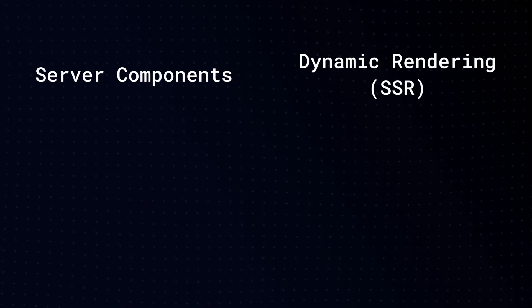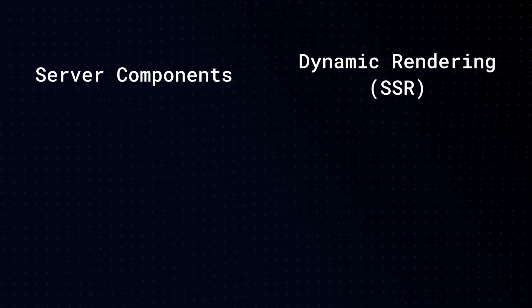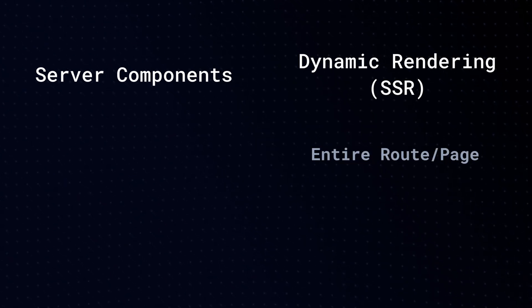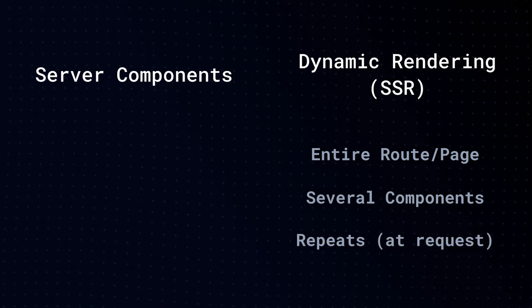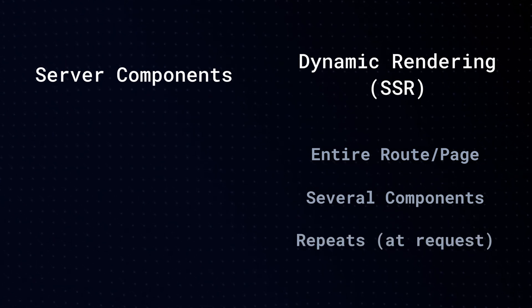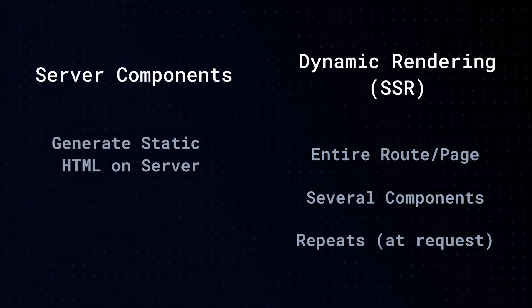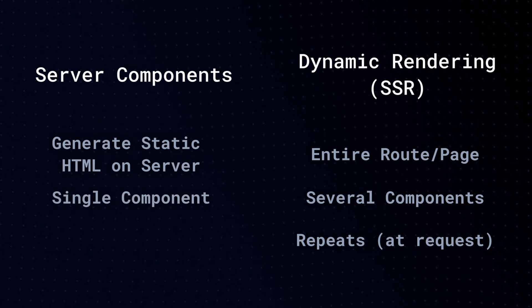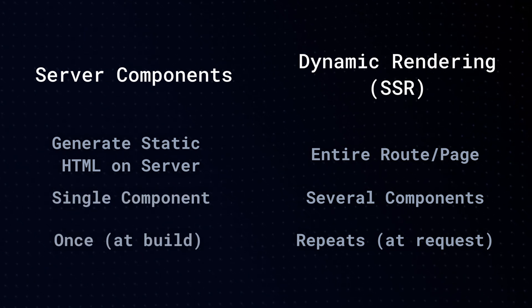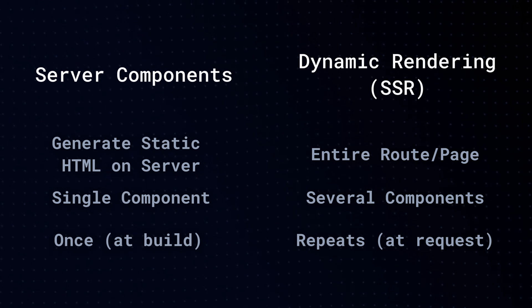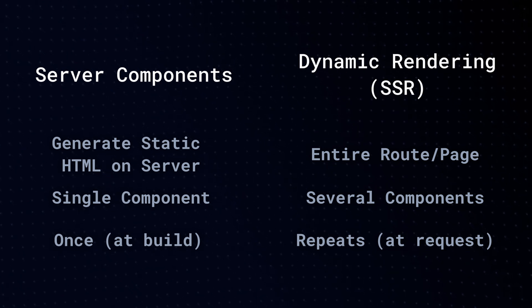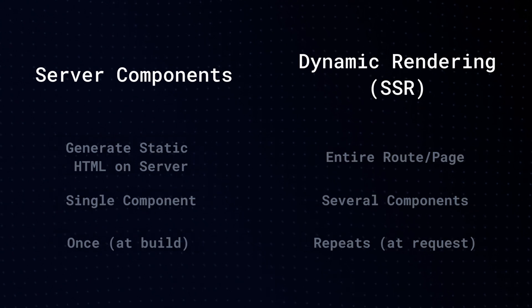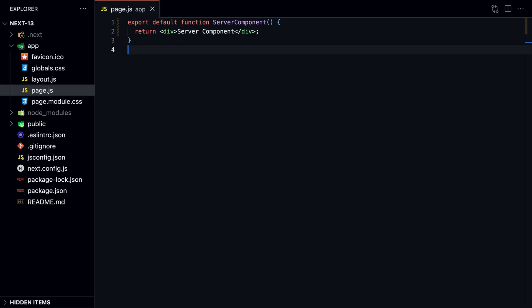Next.js recommends using server components and only client components when needed, as server components are better for performance. So what's the difference between server components and server-side rendering? Dynamic rendering, or server-side rendering, is the process of rendering an entire web page on the server. A server component, on the other hand, doesn't dynamically render an entire web page. Instead, it takes a single individual component and pre-renders it on the server during the build process. Server-side rendering and server components work together, not against each other.